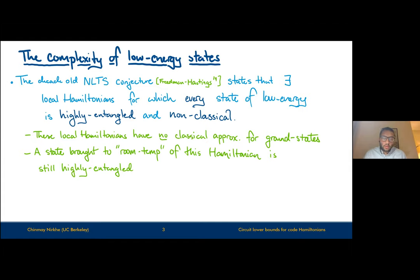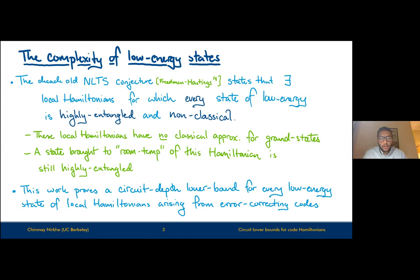These states are also ones that if you add energy to the system, the states, even at low temperature, still remain highly entangled — a property which we are not necessarily certain is true. Our work today is going to prove a circuit depth lower bound as a method for proving precisely that the states are highly entangled and non-classical, for every low energy state of local Hamiltonians that arise from quantum error correcting codes.